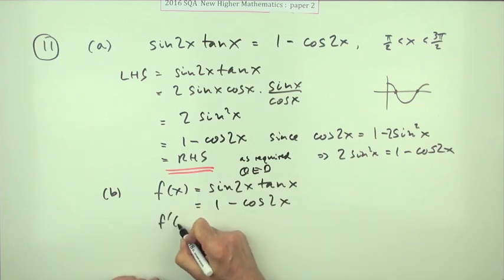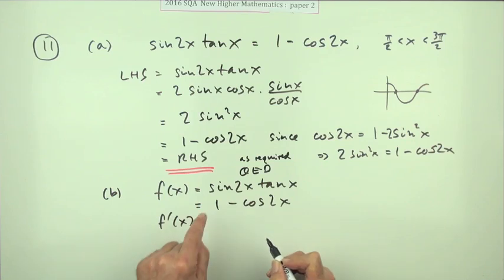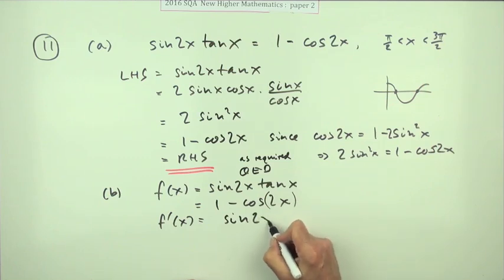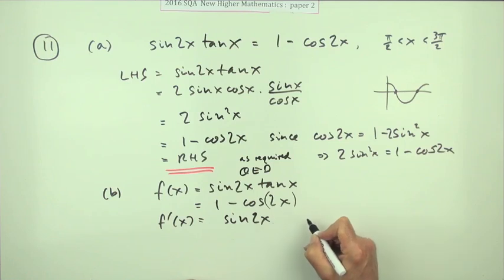So f dashed x would be: well that would go to zero, cos goes to negative sine, but it's negative anyway so it just goes to sine. Now it is a function of a function, so it's of 2x. We'd have to multiply by 2. I'll just put that to the front. So there it is: 2 sine 2x.